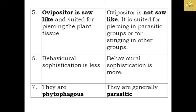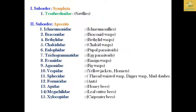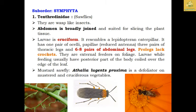In suborder Symphyta, there is only one family: Tenthredinidae, which comprises sawflies. They are wasp-like insects with the abdomen broadly jointed. The larva is eruciform with six to eight pairs of abdominal legs and prolegs. They are external feeders on foliage, feeding from the posterior part of the body, coiled at the edge of leaves. The example is mustard sawfly — Athalia lugens proxima — an important defoliator of mustard and cruciferous vegetables.